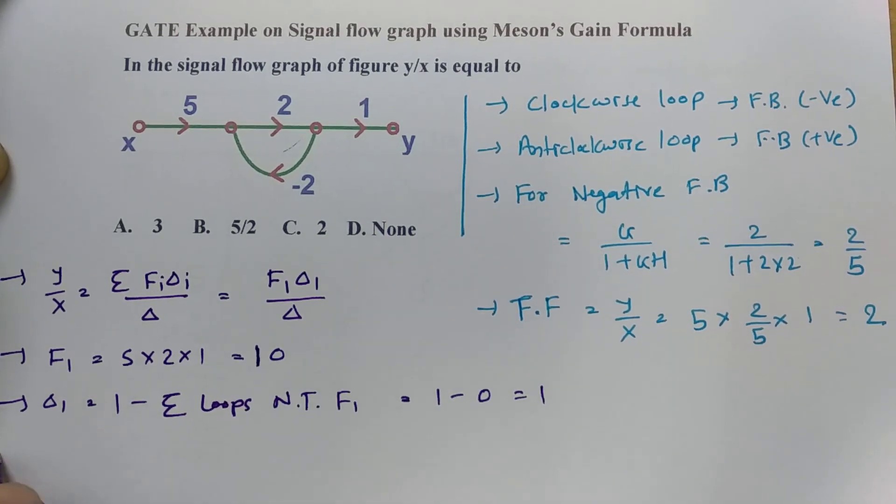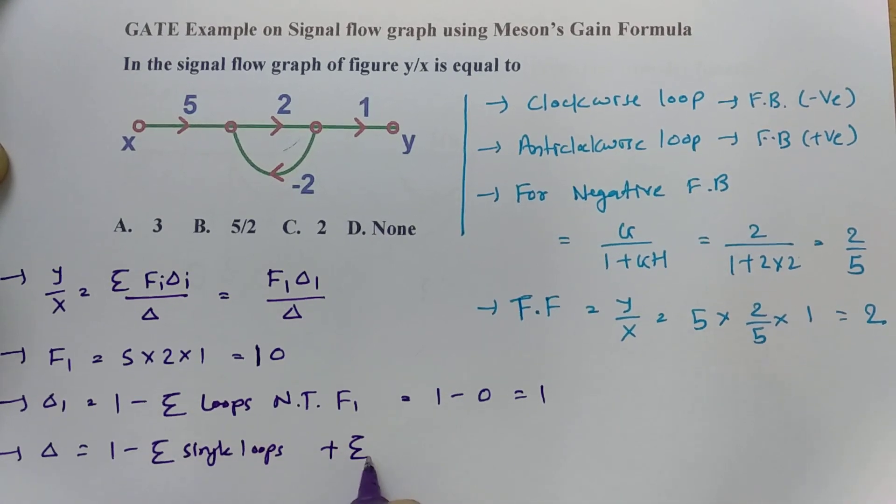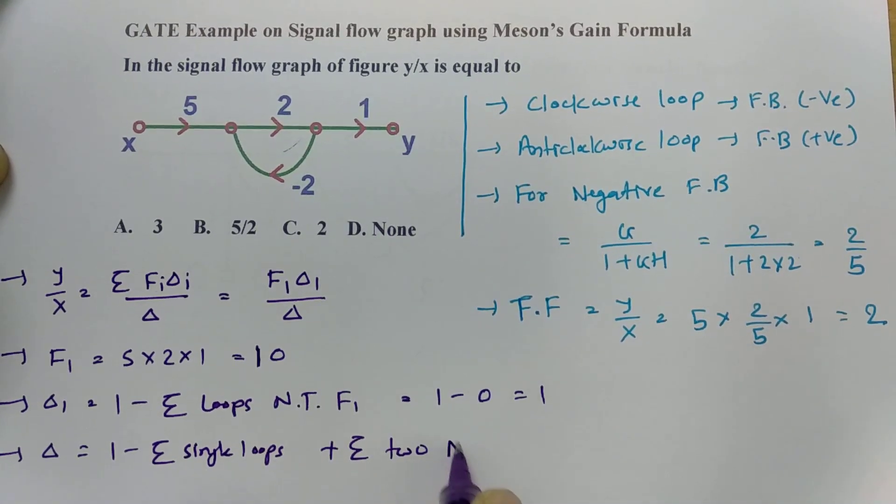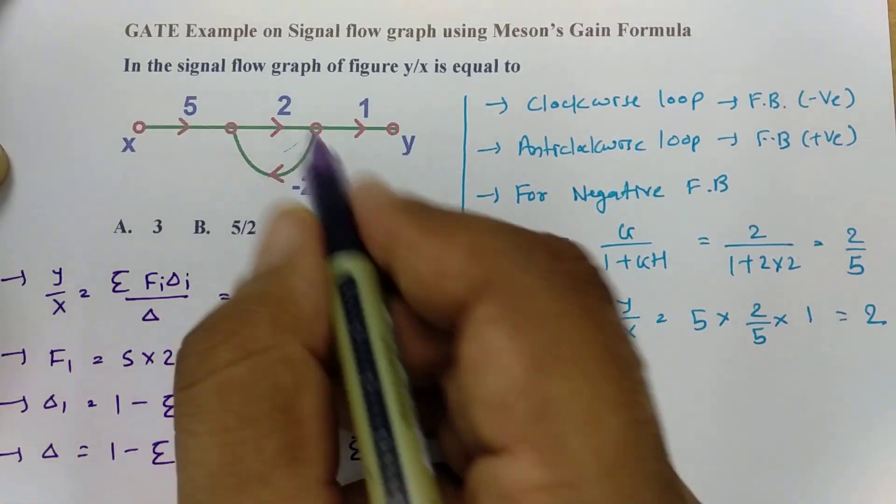And last term that is delta, which is 1 minus summation of single loops plus summation of 2 non-touching loops minus 3 non-touching loops. That is how it is there. Here only one loop is there.